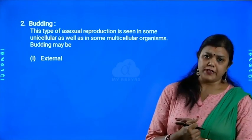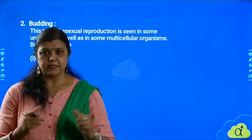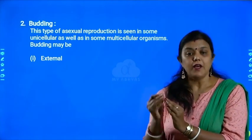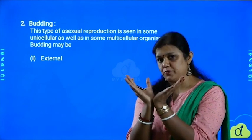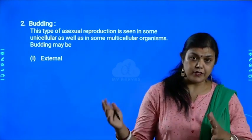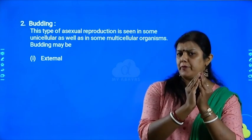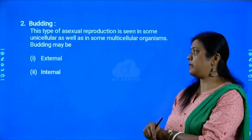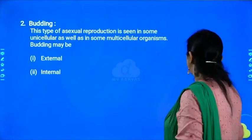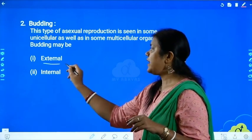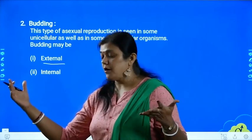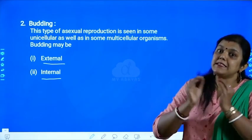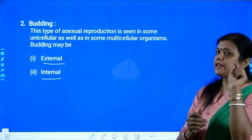What happens in budding? Budding is a process where there will be a bud — just like how we get a bud in a flower before it blooms, similarly in asexual reproduction there will be a bud formation and that bud will grow into a new organism. This process is divided into two ways: one is called external budding and the other is called internal budding. In external budding the bud is formed outside the body of the organism; in internal budding the buds are formed inside the body.